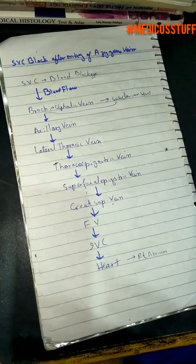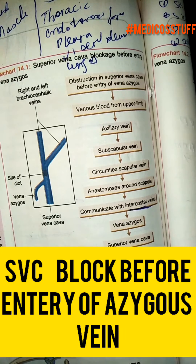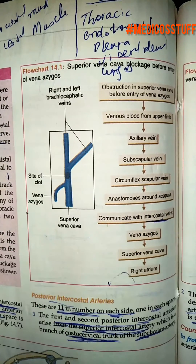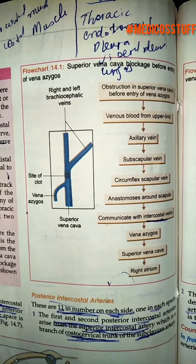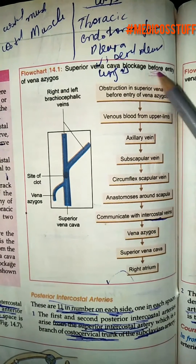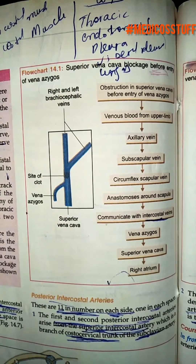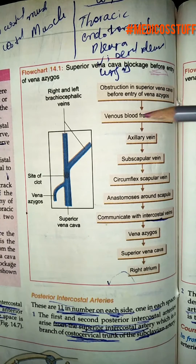This was the scenario for SVC block after the entry of the azygos vein. Now we will discuss the scenario before the entry of the azygos vein — when the SVC is blocked before the azygos vein joins it.